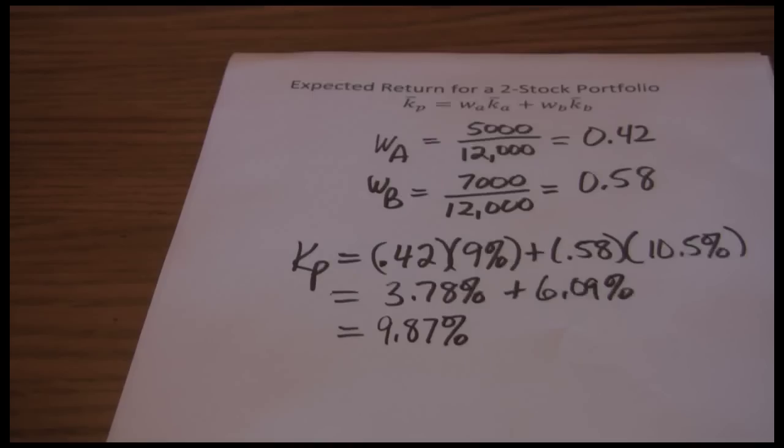So again, the expected return for a two stock portfolio is just a weighted average. Proportion of our investment in stock A times its expected return. Proportion of our investment in stock B times its expected return.